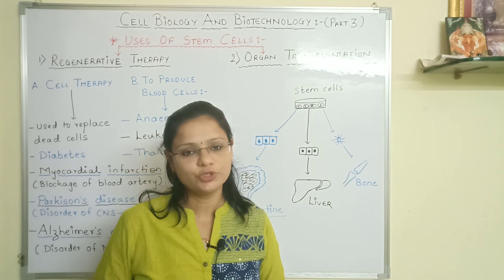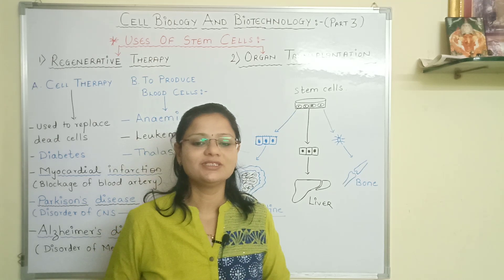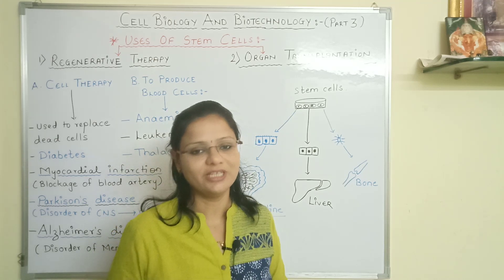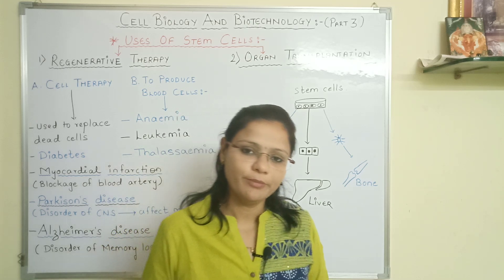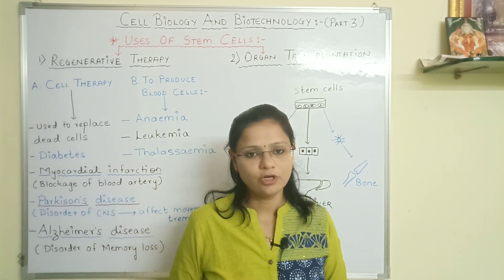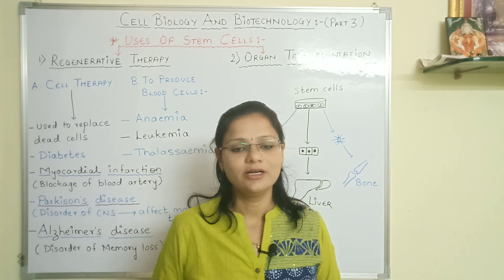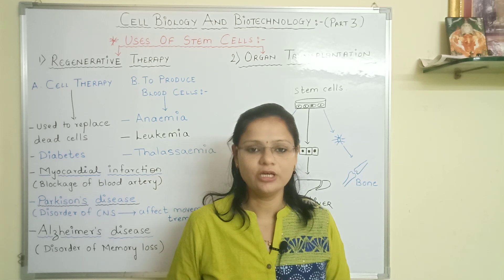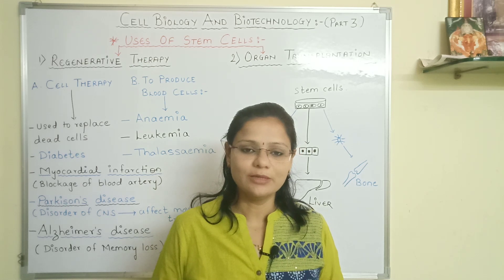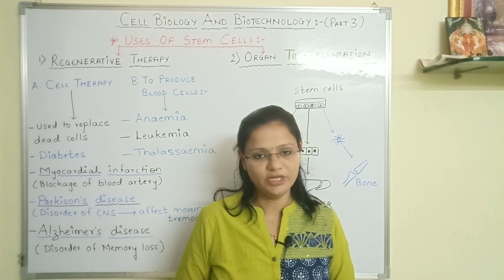Why does Parkinson's disease happen? Because the neural cells of the central nervous system — the brain, spinal cord, and nerve cells — are damaged or dead. We can replace those damaged cells with the help of stem cells.